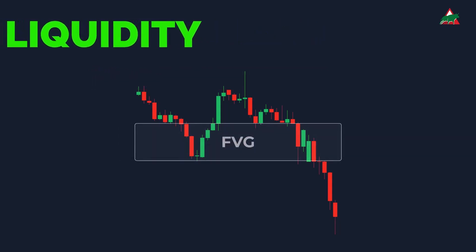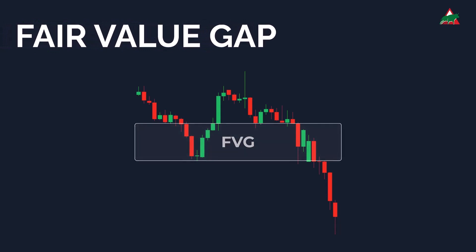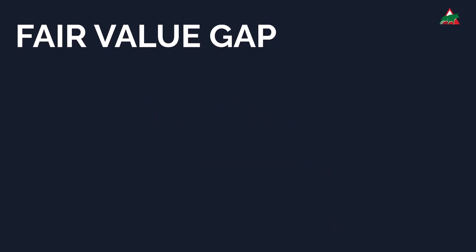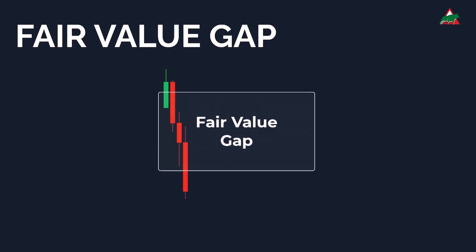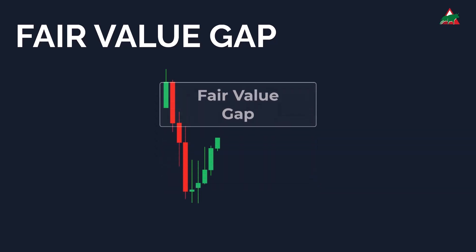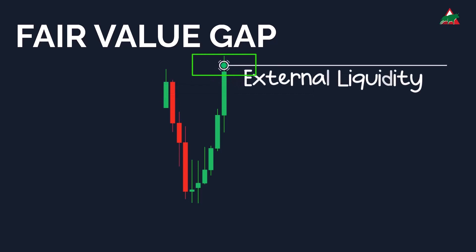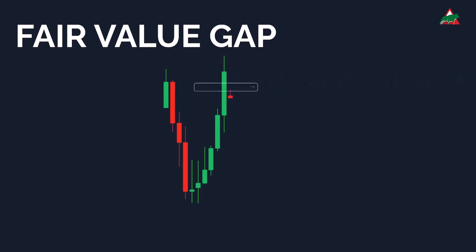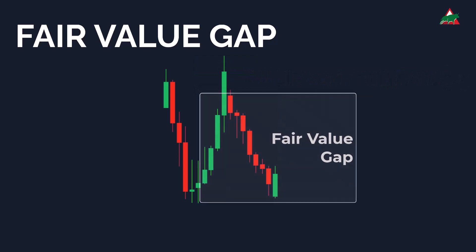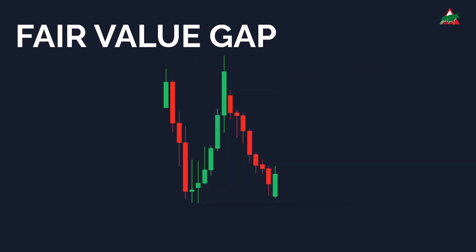The second factor is fair value gaps. These gaps are like empty spaces in the market, waiting to be filled. Look at this example: the price sharply dropped, leaving behind a fair value gap. Then it climbed back up to fill that gap and clear out external liquidity. Once external liquidity was gone, the price reversed to fill the most recent fair value gap. This cycle is how the market operates, continually seeking to clear liquidity and fill those gaps.